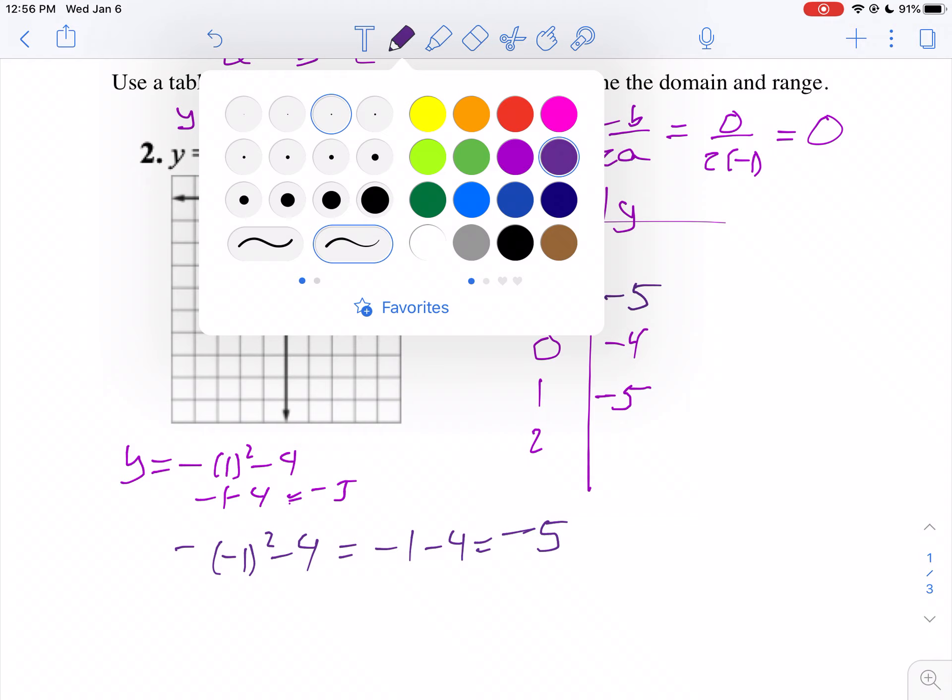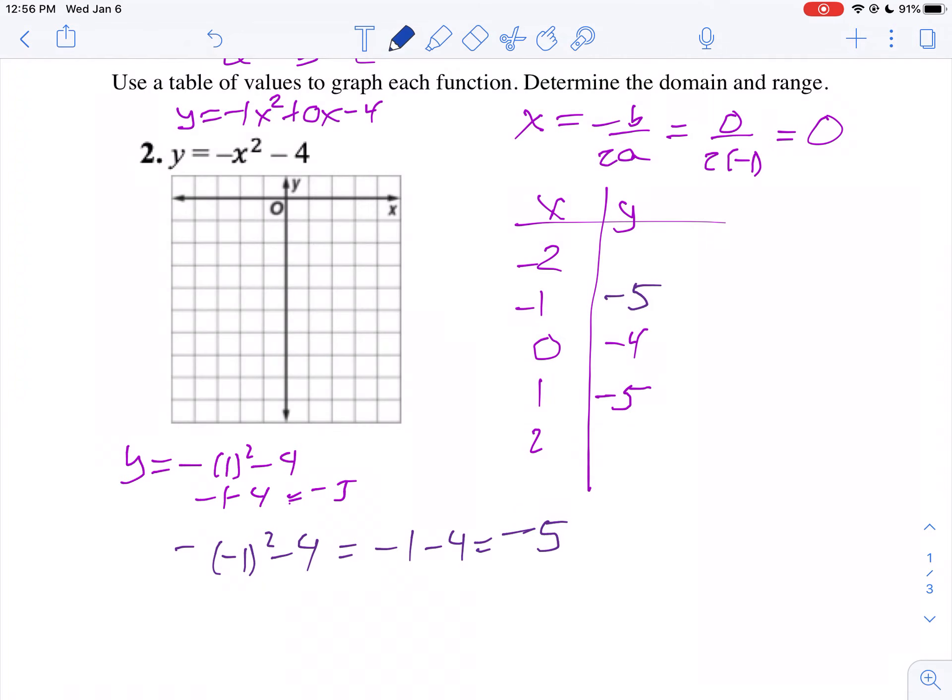I'll put in 2. So y equals the opposite of 2 squared. Notice it's the opposite of x, so I put the number for x in the parentheses, but I keep the negative sign outside the parentheses. Well, that'll be negative 4 minus 4, which is negative 8. And if I put in a negative 2, I get the same answer. So that's why I plotted those.